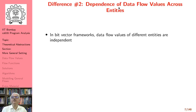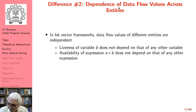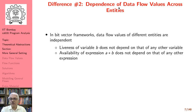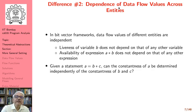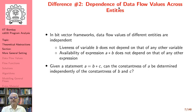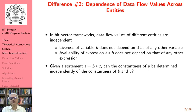This clearly is difficult to describe using a bitvector data flow framework — that is difference number 1: our data flow values are of a different kind. The second difference is the dependence of data flow values across entities. In bitvector frameworks, data flow values of different entities are independent — we could perform liveness analysis of variable b without looking at liveness of any other variable. Whereas in constant propagation, given a statement a = b star c, we cannot determine the constantness of a independently of the constantness of b and c.